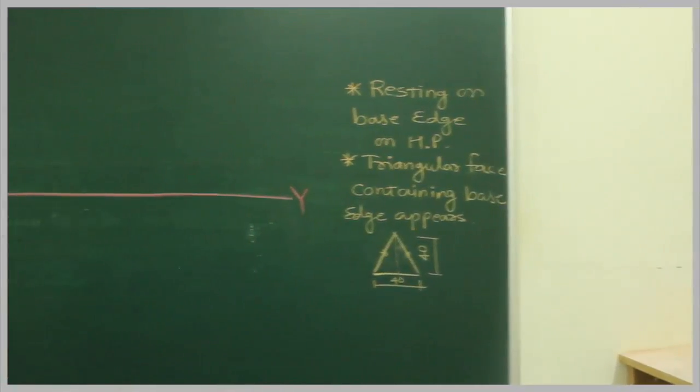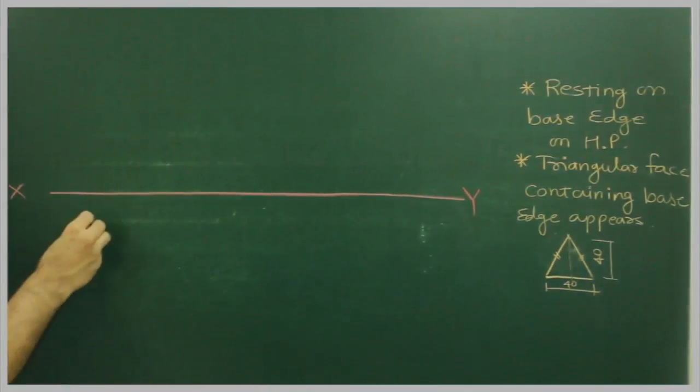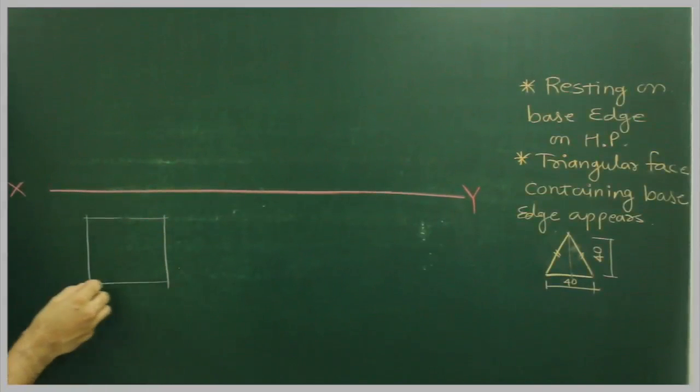So what we will do, first we will draw resting on its base edge, so that means top view will give you true shape, we will draw square root top view. It is resting on one of its base edge on HP.